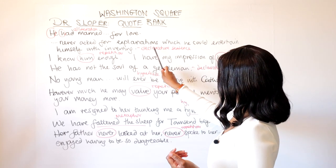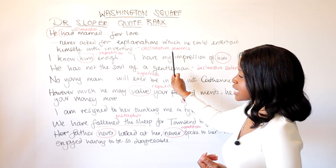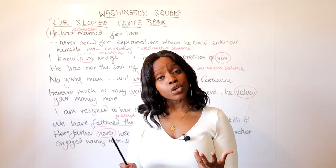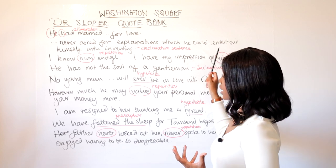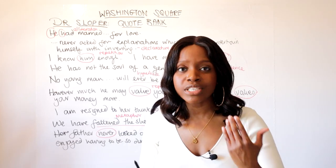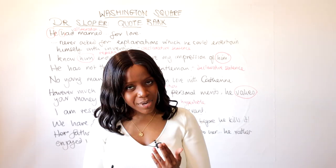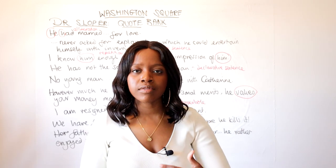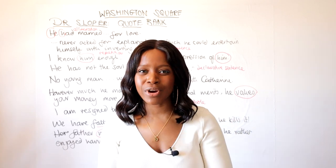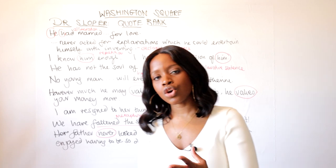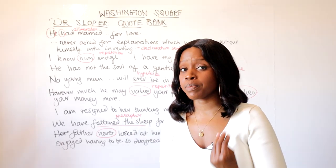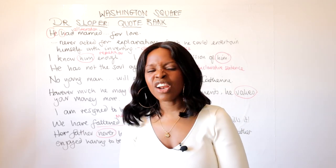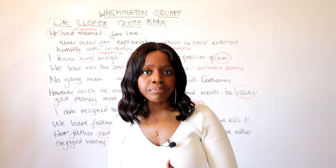The next quote: 'he never asked for explanations which he could entertain himself with inventing.' This is a declarative sentence — a sentence that states a fact, feeling, or mood. What this shows us is that Dr. Sloper is very arrogant; he thinks he's very intelligent and always right, and never questions his own judgment. He feels intellectually superior, especially compared to Katherine, whom he sees as plain and disappointing, and also to Mrs. Penniman.